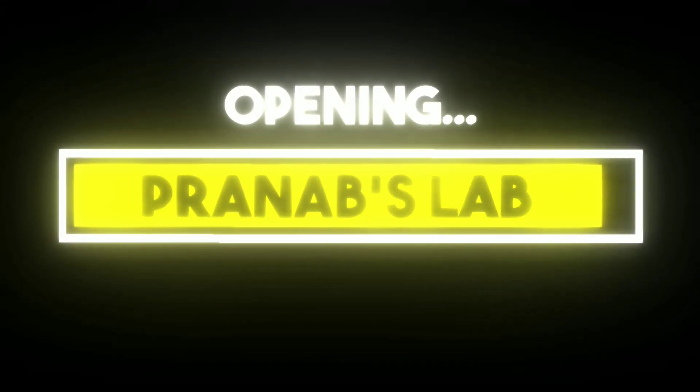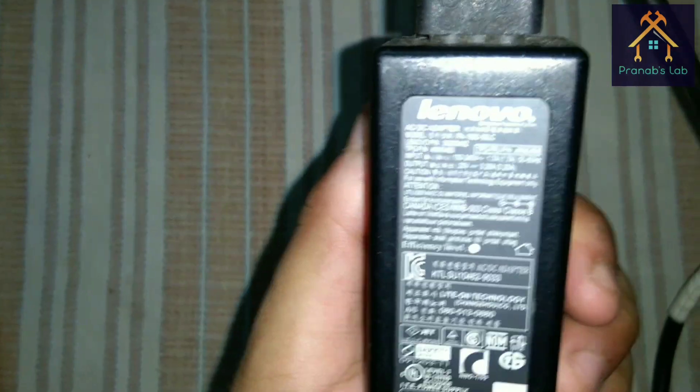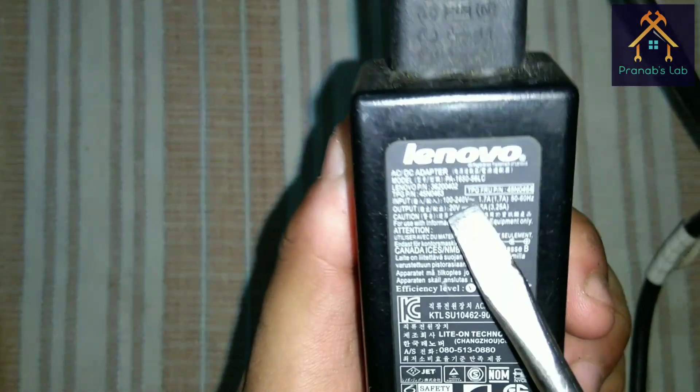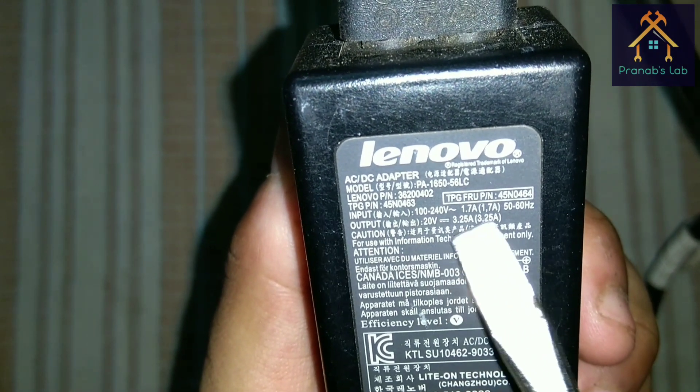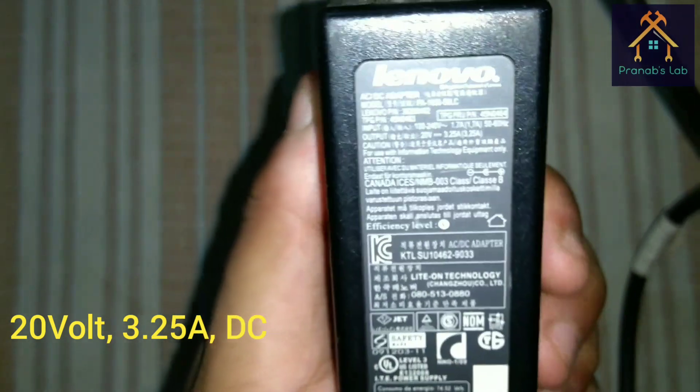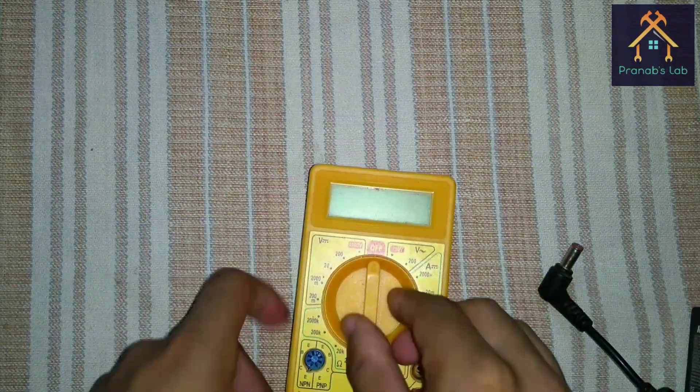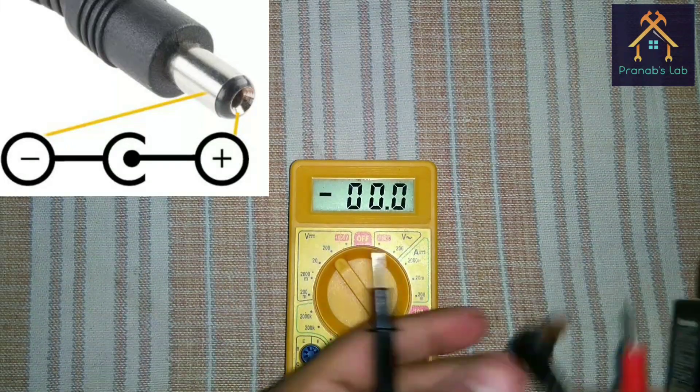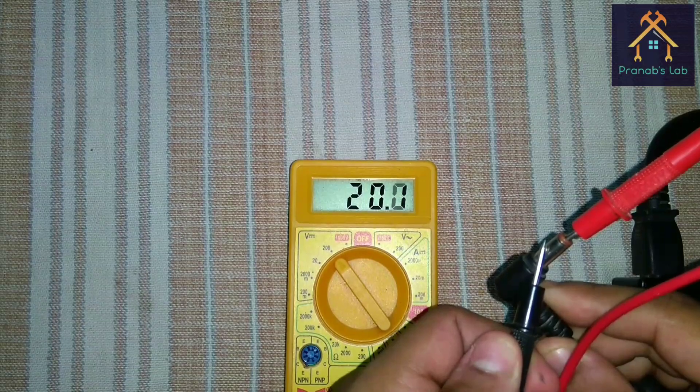Let's switch on. For supplying the DC power to the transformer, I am going to use this laptop power adapter. You can see the output voltage is 20V and 3.25A DC. Now let's check the output voltage, and you can see the output voltage is 20V approximately.